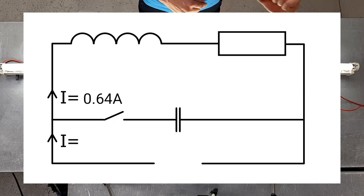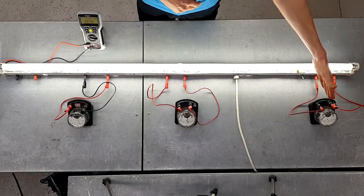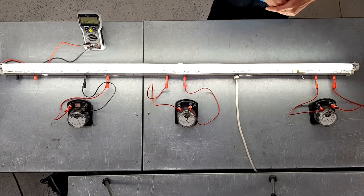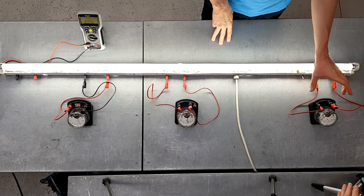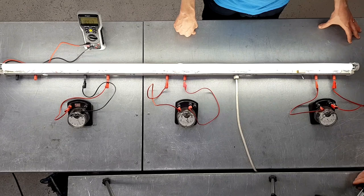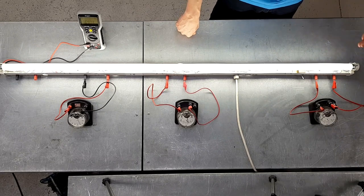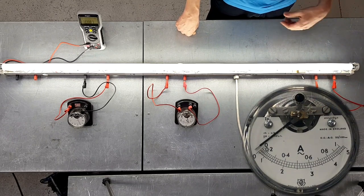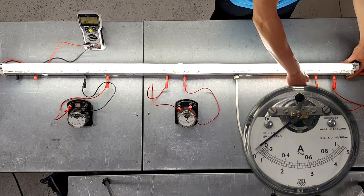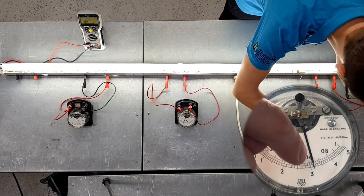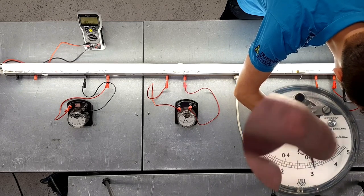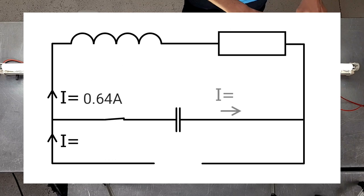Okay, what we're going to do now is go over to our power factor correction capacitor and introduce that into the circuit. This ammeter is going to tell us how much current is flowing into the power factor correction capacitor. At the minute it's disconnected so there is absolutely no current flowing through there, so we'll switch the power factor correction capacitor on. We're getting just over 0.6 - about 0.63 amps flowing into the capacitor.